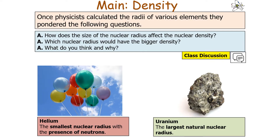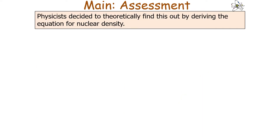Once physicists had calculated the radii of various elements, they pondered the following questions: how does the size of the nuclear radius affect the nuclear density? Which nuclear radius would have the bigger density, and why? We could have uranium, the largest naturally occurring nucleus, or helium, the element with the smallest nuclear radius containing neutrons. So which of these elements would have the bigger nuclear density, and why? Physicists decided to find this out by deriving the equation for nuclear density.